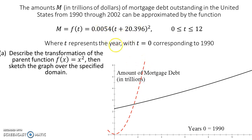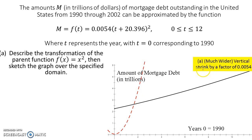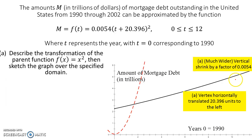Knowing those two pieces of information, we can say this: because it is much wider, it has a vertical shrink by a factor of 0.0054. There are two ways to describe this — you could also refer to it as a vertical stretch — but I'll describe it as a vertical shrink by a factor of 0.0054. The other part: it was translated to the left 20.396 units, which moves the vertex from over here back. That's describing the transformation for part A — the translation to the left and the widening of it.